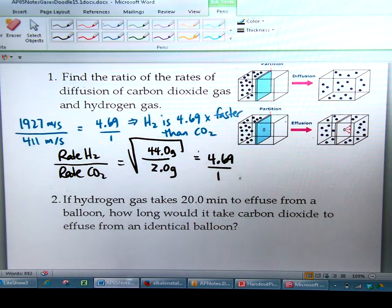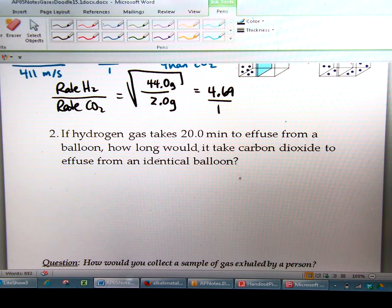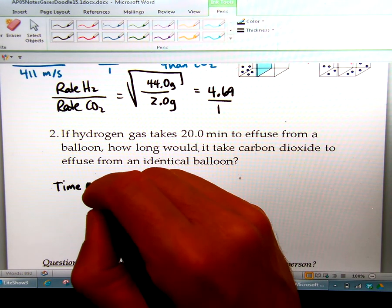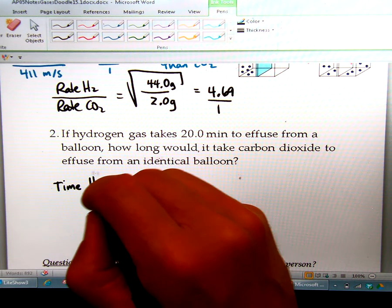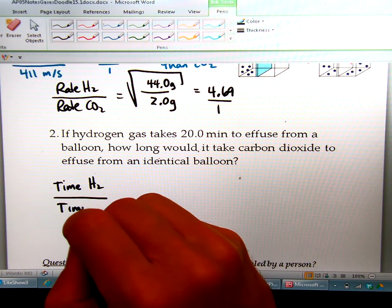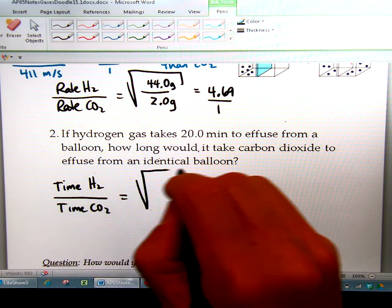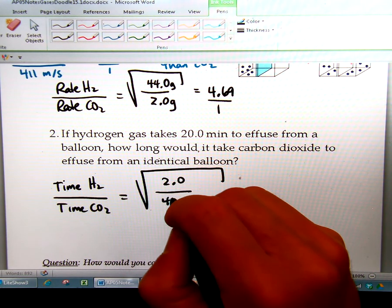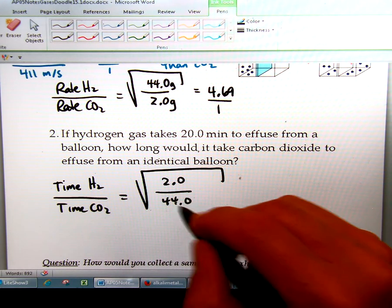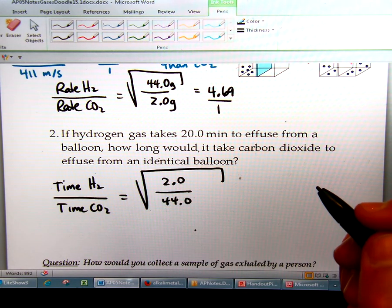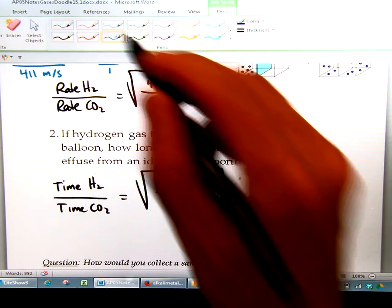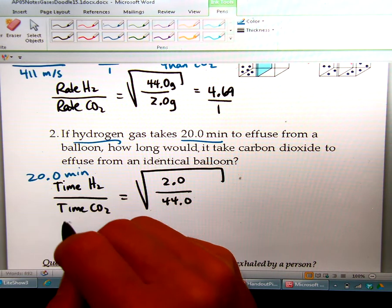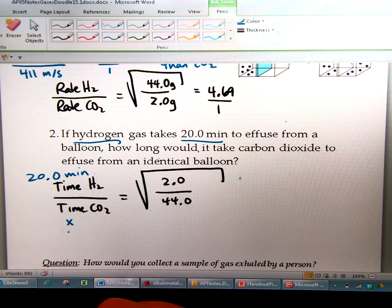Let's take this example here with carbon dioxide and hydrogen. So the general equation now is time one, we'll call it hydrogen, over time two, which is carbon dioxide, is going to be the square root of molar mass one, which is two, over molar mass two, which is 44. And then you want to fill in the time that's given. So the time that's given is 20 minutes for the hydrogen. So 20 minutes goes here, and this is going to be your x.